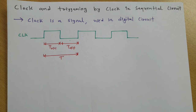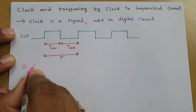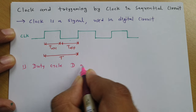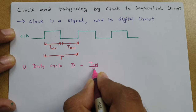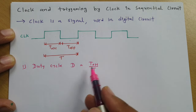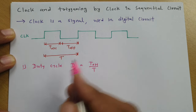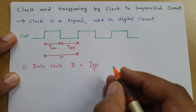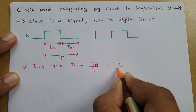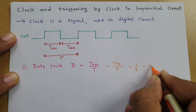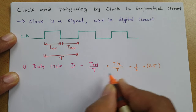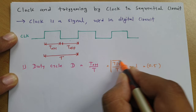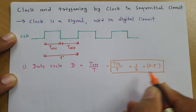Based on this, we can define some basic parameters of the clock signal. One is duty cycle. Duty cycle is T_on divided by T. Usually in digital electronics we use a duty cycle of 0.5, meaning T_on equals T divided by 2, so T_on divided by T equals 0.5. In most cases you will find we use a 0.5 duty cycle in digital circuits.